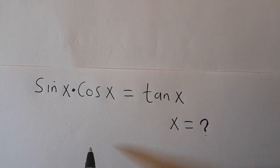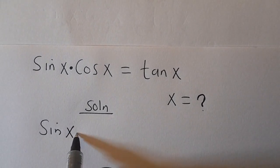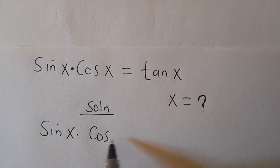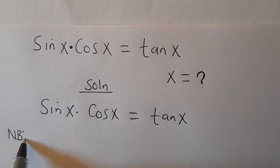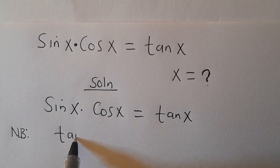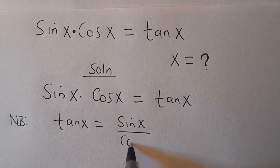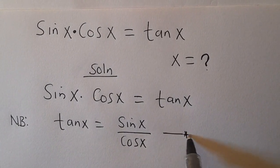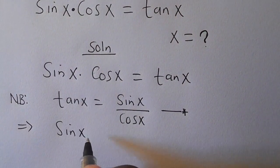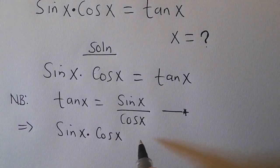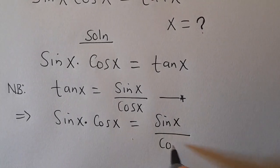Now let's go to the solution. From the above we have sin(x) multiplied by cos(x) equals tan(x). But note that in trigonometry, tan(x) equals sin(x) divided by cos(x). So by substituting, this implies that sin(x) multiplied by cos(x) equals sin(x) divided by cos(x).